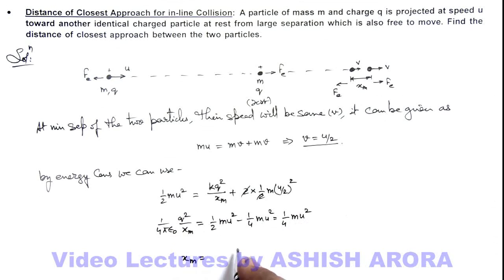On further simplifying, I can get the value of x_m, which is given as q²/(πε₀mu²). That is the answer to this problem.